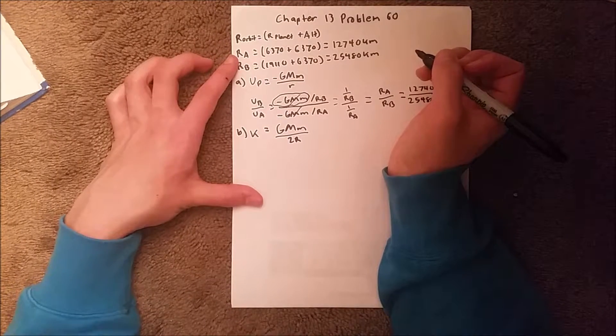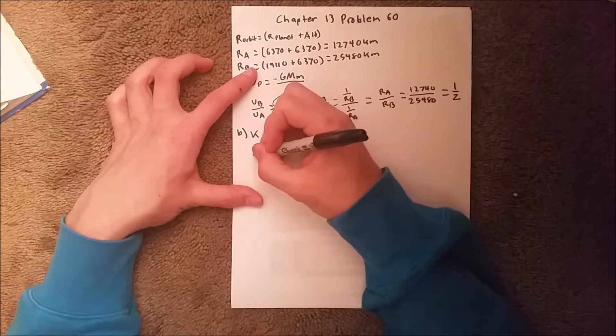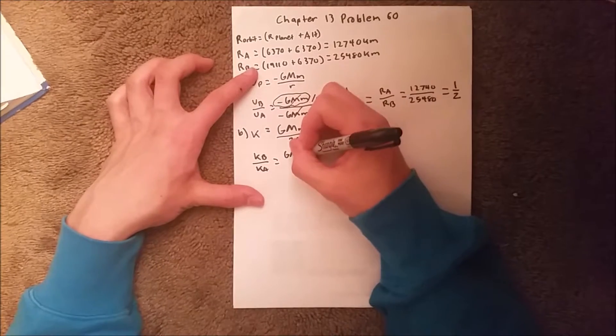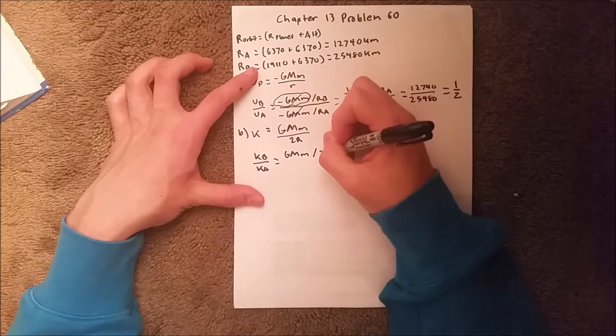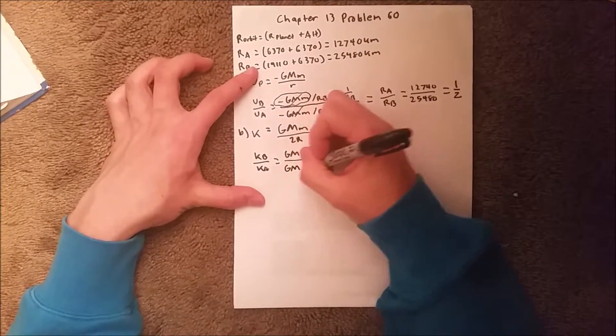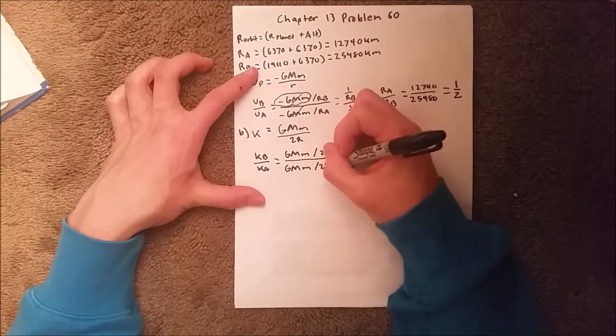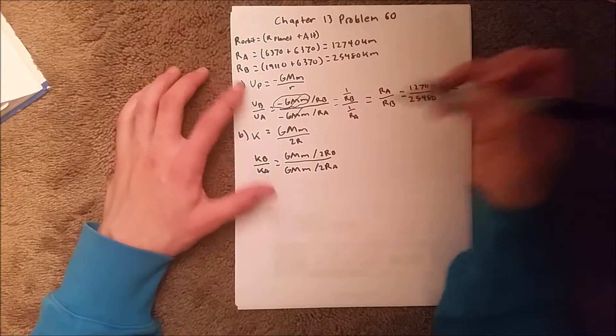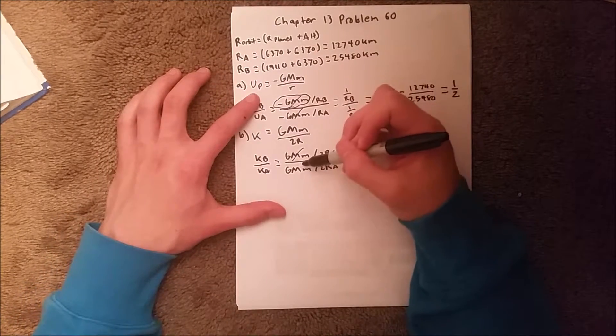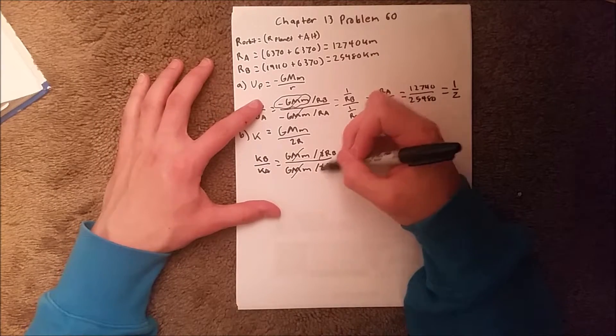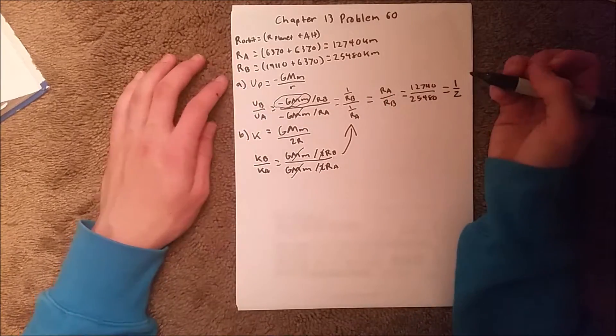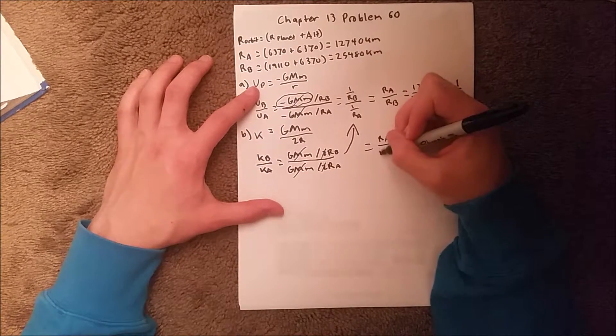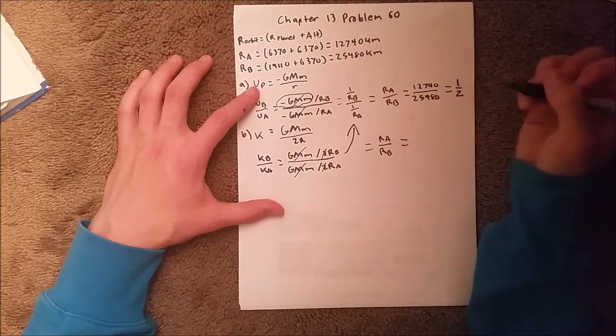And so we are going to do the same thing we did here. Kinetic energy of B over kinetic energy of A is G, M, M, over 2R of B, over G, M, M, over 2R of A. Since these are constants, we can actually cross those out, and we can actually also cross out these twos, and we get the same thing we got up here. So this is actually again equal to radius of A over radius of B, which is 1 half.